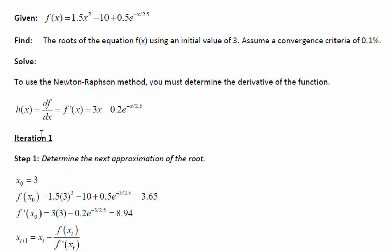To use the Newton-Raphson method, we need the derivative. To take the derivative, we differentiate f with respect to x and get 3x minus 0.2e to the negative x over 2.5. For iteration one, we have our approximation x equals 3. We plug that into our function and our derivative. The function is 3.65, the derivative is 8.94.